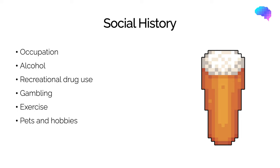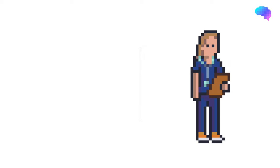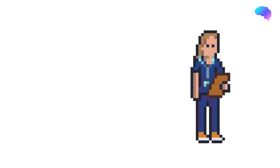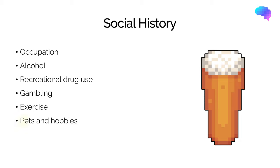Other aspects of social history particularly important in a respiratory history include the patient's current and previous occupations, which helps identify exposure to agents that may cause respiratory disease. For example, people working in shipyards, construction, and plumbing before new regulations were implemented may have been exposed to asbestos, increasing their risk of mesothelioma. Farmers may be at risk of allergic extrinsic alveolitis. It's also important to ask about pets and hobbies, as pet allergies may not be immediately obvious. Other aspects include alcohol, recreational drug use, gambling, and exercise.